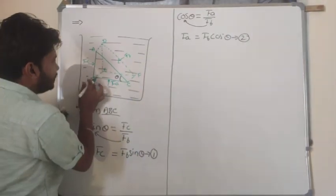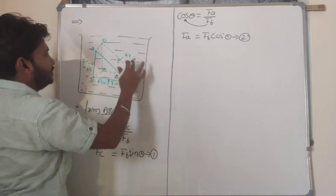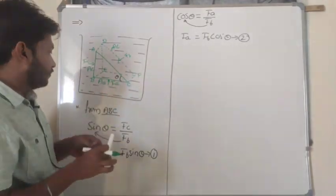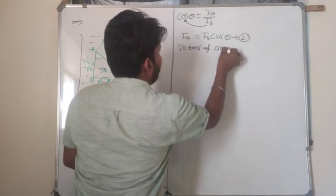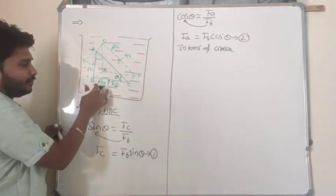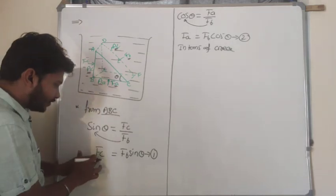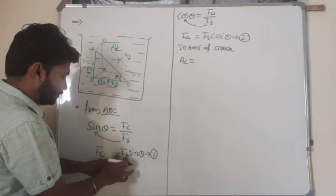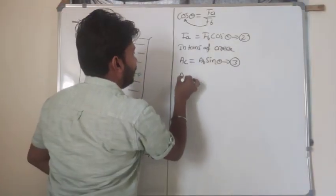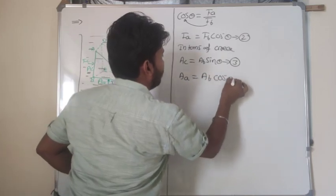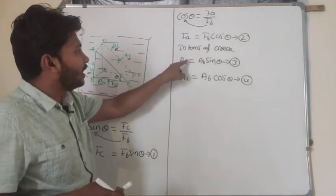Now expressing the same relationships in terms of area: area A_A corresponds to face A, area A_C corresponds to face C, and area A_B corresponds to face B. Equation 1 in terms of area becomes: A_C equals A_B sine theta — equation 3. Equation 2 in terms of area becomes: A_A equals A_B cosine theta — equation 4. Now I will divide equation 1 by equation 3.